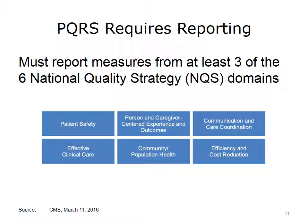The Strategy of Community and Population Health is a domain concerned with prevention, signifying the most radical shift with the fee-for-service payment model. Quality measures for this domain include clinical and preventative services performed to improve the health of the overall population the provider serves. The population health domain requires healthcare providers to think about their job very differently from the fee-for-service business model, which provides little or no incentive to be concerned with prevention. The Strategy of Communication and Care Coordination concerns appropriate and timely sharing of information with patients and caregivers. Finally, efficiency and cost reduction measures reflect efforts to lower costs, reduce errors, and significantly improve outcomes.